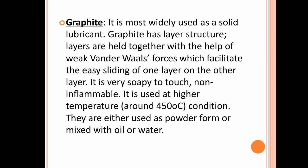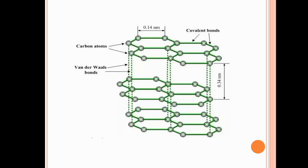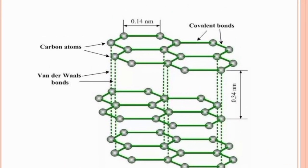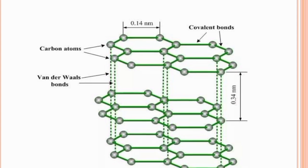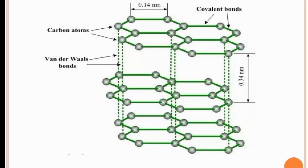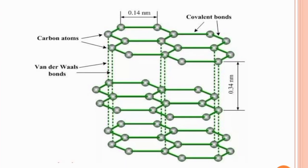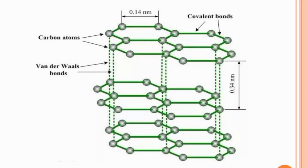Graphite is generally used in pencils. The carbon atoms in the graphite structure are arranged in layers, with the distance between carbon atoms being 0.14 nanometers.